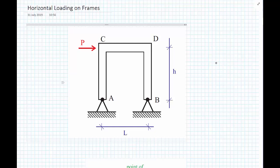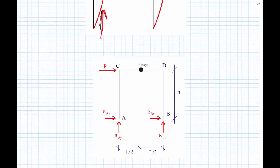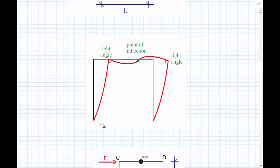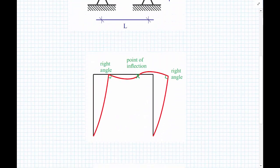If we draw a good guess of the deflected shape, and we did this in the qualitative analysis of structures, we find out that we would expect a point of inflection somewhere across the beam. There are no points of inflection in the columns.